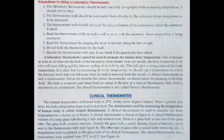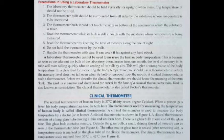Why can't a laboratory thermometer measure body temperature? Because when we remove it from the mouth, the mercury goes back to its initial position — there is no kink inside it, no narrow bend, so the mercury falls back down.